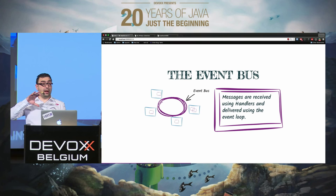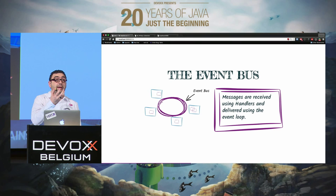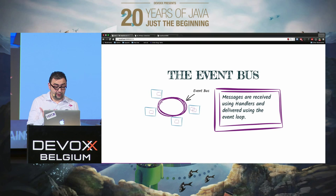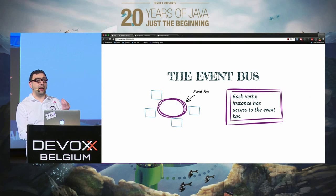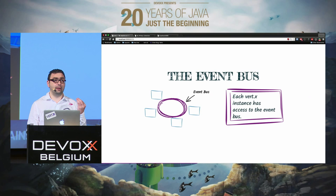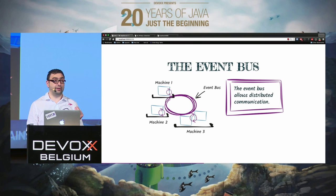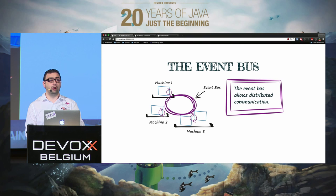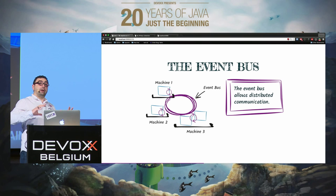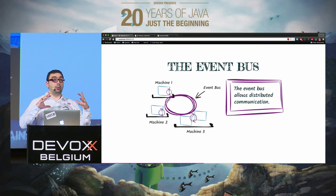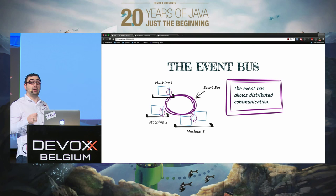Events are sent through the event bus and received by handlers. Locally, the event bus is delivered by the event loop — and importantly, the event bus is distributed. You don't have to do anything to send an event to another JVM or another part of your application as long as you know the address. Vert.x will create a cluster automatically and connect all parts of your application using events.